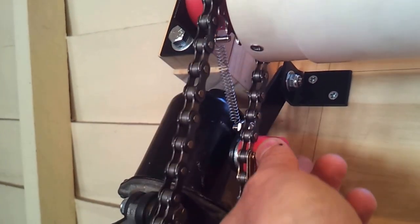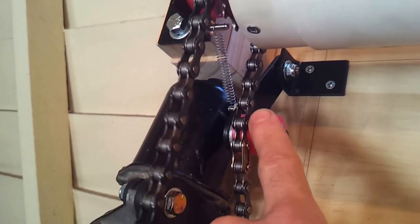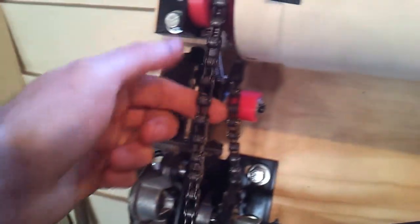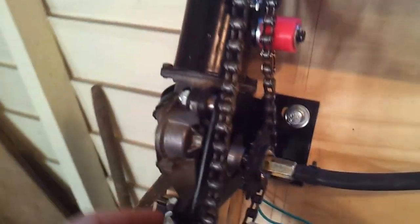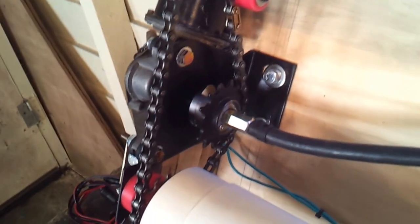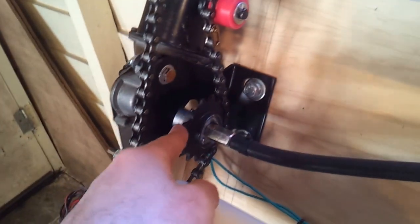So what I've done instead is actually made a little tensioner here, which is basically an idler wheel on a spring. All that does is keeps the tension on the chain, keeps the chain tight against the sprocket wheel here.